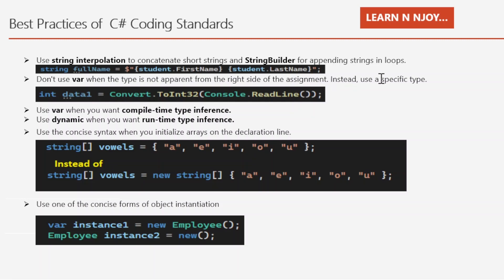Number two: don't use var when the type is not apparent from the right side of the assignment — use a specific type instead. For example, use 'int data1 = Convert.ToInt32(Console.ReadLine())' because from that statement alone it is not immediately apparent what type will be returned. Number three: use var when you want compile-time type inference.